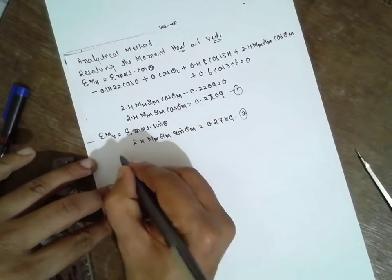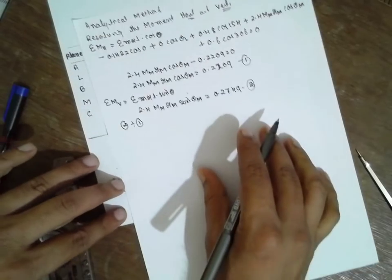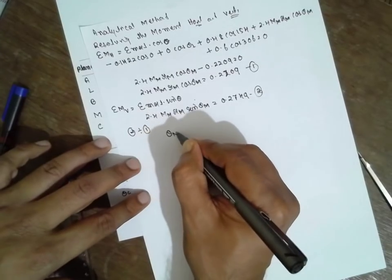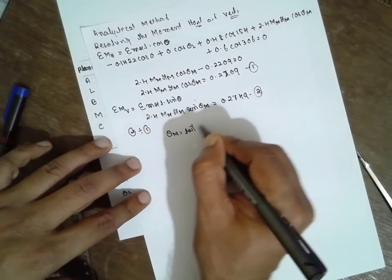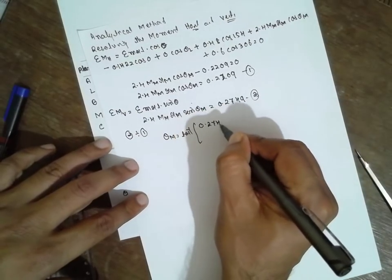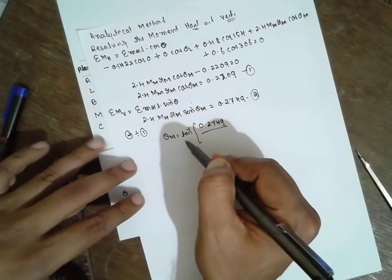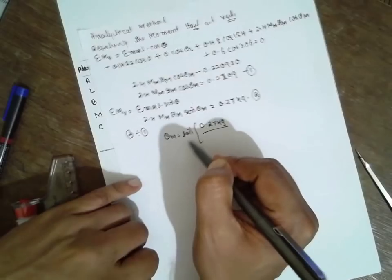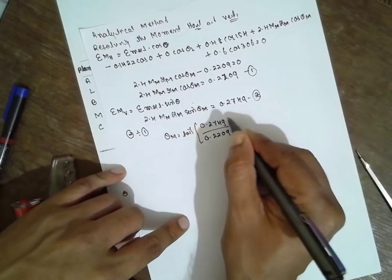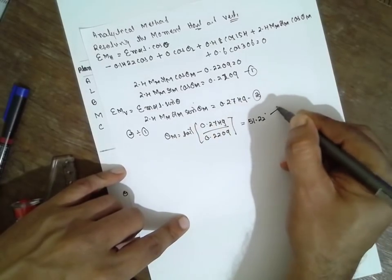Now divide 2 by 1. You will get the values in terms of tan. Theta M equals tan inverse of 0.2749 divided by 0.2209. These terms cancel, it becomes sin theta by cos theta, which is tan theta. Tan inverse gives 51.22 degrees. It lies in first quadrant.